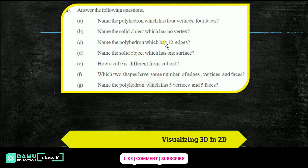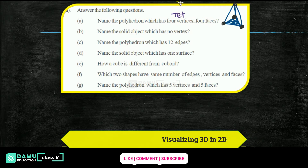So, let's take a shape with 4 vertices and 4 faces. How many vertices are there? One, two, three, four. So normally what you can write for this is tetrahedron. Tetra means four, hedron means polyhedron. Tetrahedron — this is 4 faces and 4 vertices.